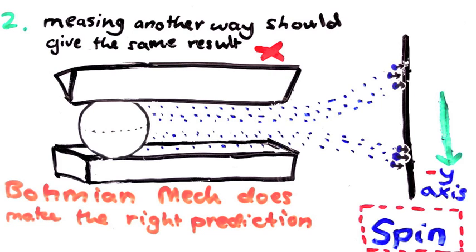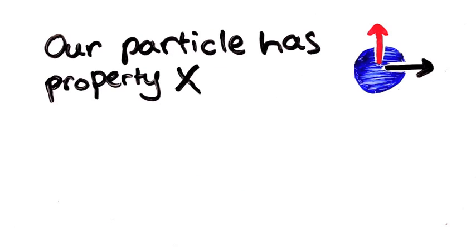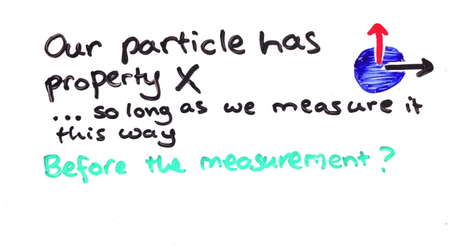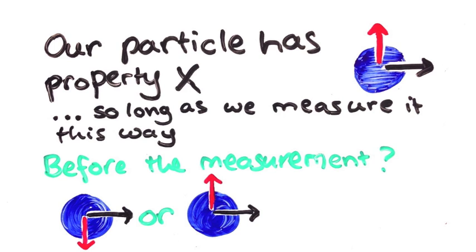The issue is much more subtle than that. If we can't say our particle has property x without adding the proviso, so long as you measure it this way, then what property does the particle have before anyone decides how to measure it? I mean, this seems like a quantum mechanics level philosophical problem.